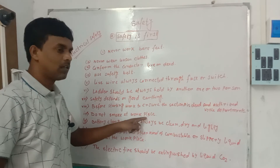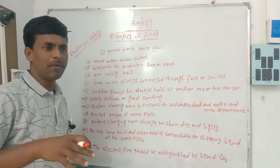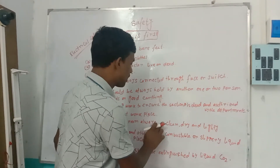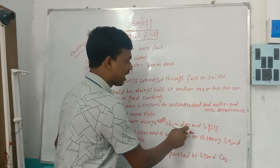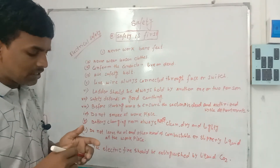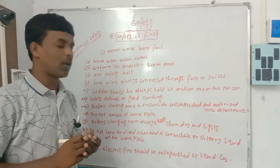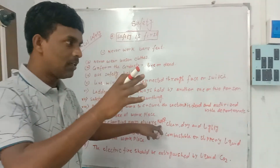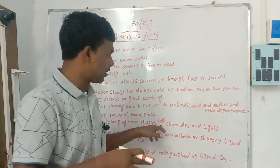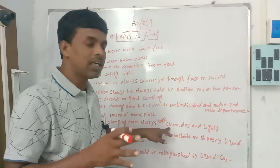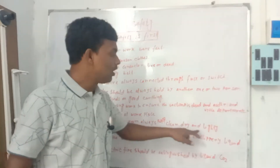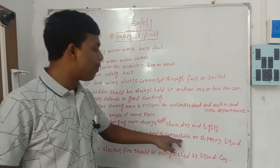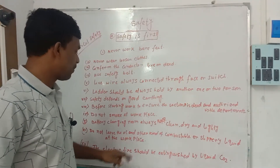Next, do not smoke at the workplace. We have to work in the area where combustible material is present. The battery charging room is always kept clean, dry, and lit. The battery charging room is called the heart of the industry or the heart of the station.